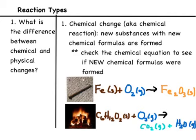The first one we're going to talk about is a chemical change. A chemical change is when a chemical reaction occurs — we have new substances with new chemical formulas being formed after the change. You're going to check the chemical equation to see that new chemical formulas are formed on the product side.